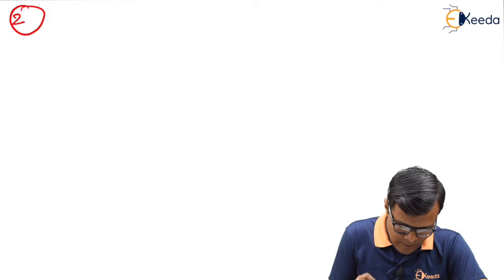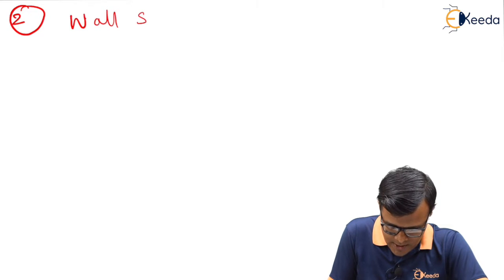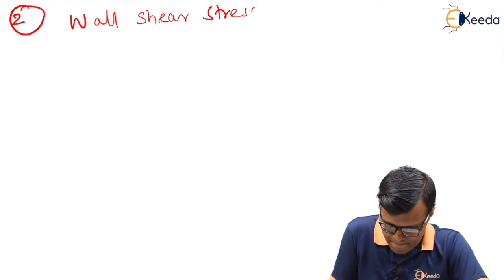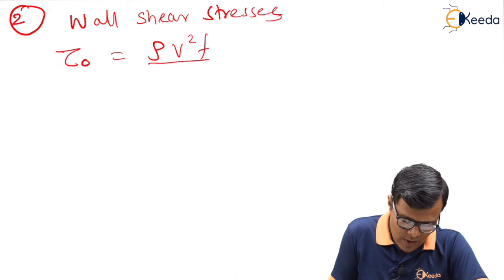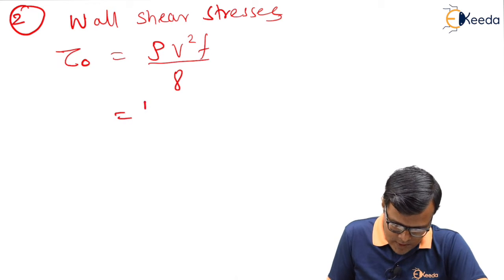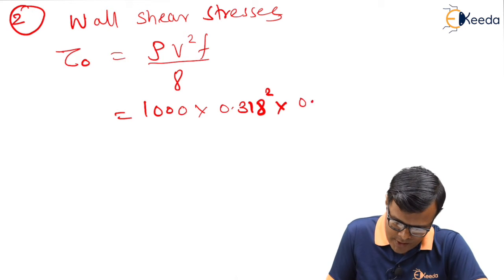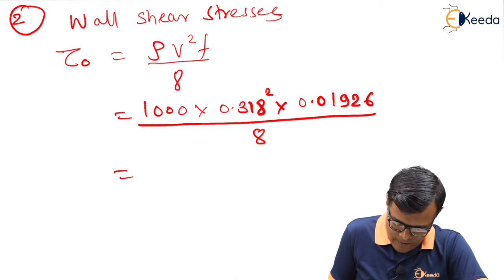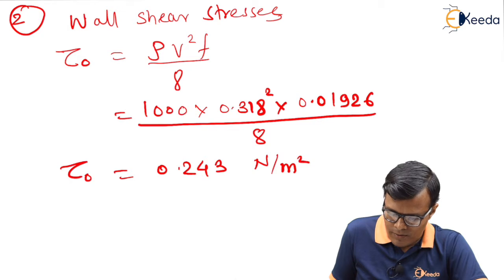This is the first thing that we have to calculate. Secondly, wall shear stress τ₀ is ρV²f upon 8. Hence by putting values of all the things, rho is 1000, V is 0.318², f is 0.01926 upon 8. We have τ₀ as 0.243 Newton per meter square.